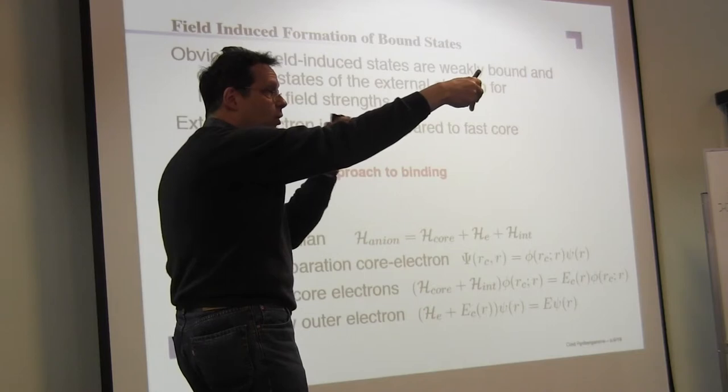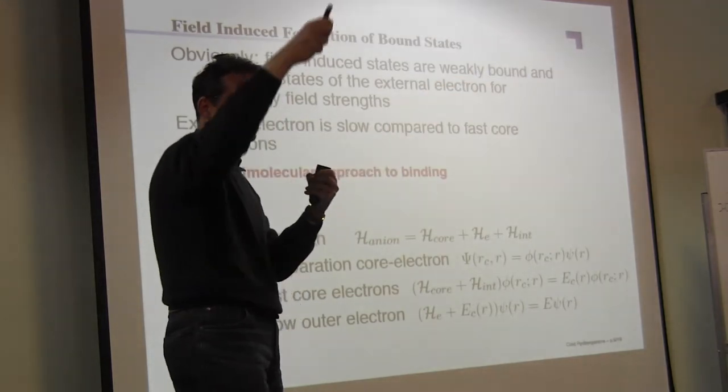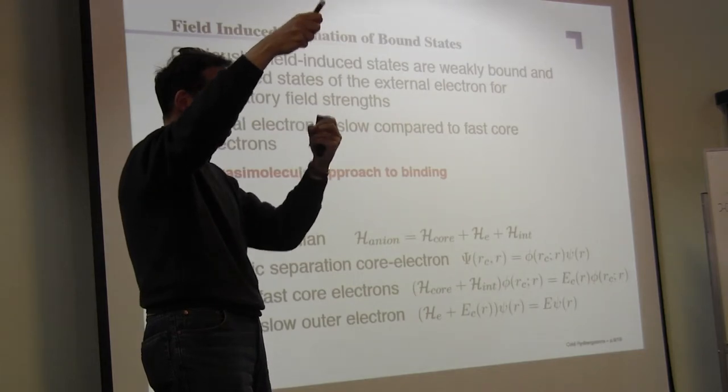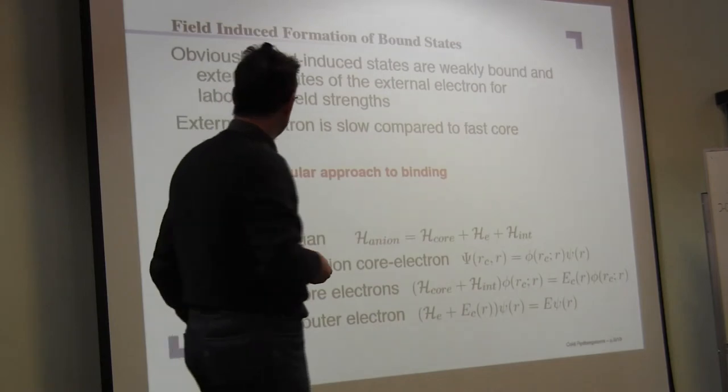So you have an extra electron, and that extra electron out there should be treated differently from the core of the atom, which is neutral. Now it's not Rydberg where I have a minus electron and plus core, now we have a minus electron and a neutral core. That's a much weaker interaction.